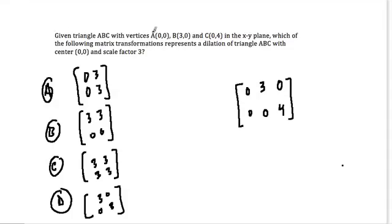When we're given triangle ABC with vertices A, B, and C, so A is at (0,0), you see that right here, B is at (3,0), and C is at (0,4) in the xy plane, it's two-dimensional. Which of the following matrix transformations represents a dilation of triangle ABC with center (0,0) and a scale factor of 3?